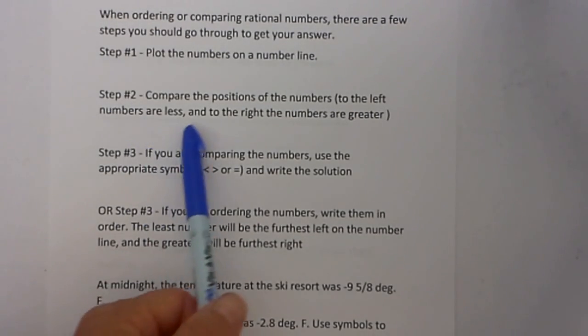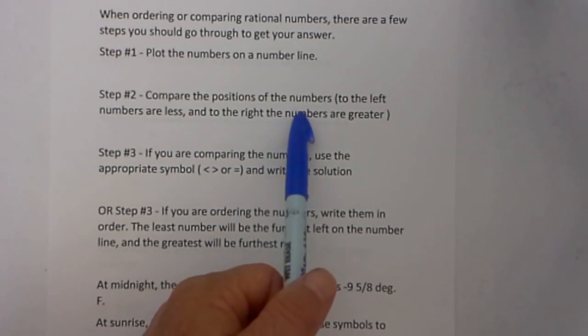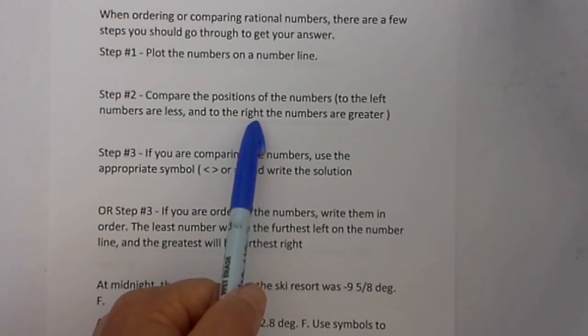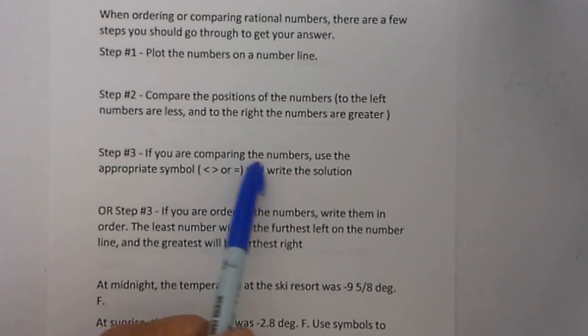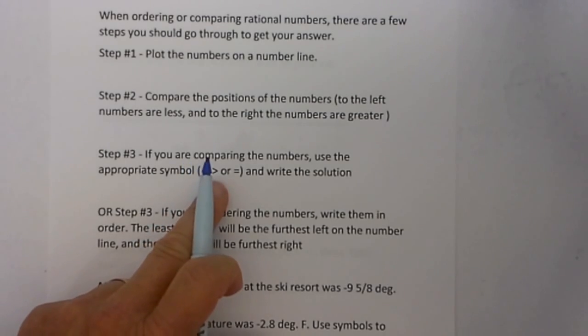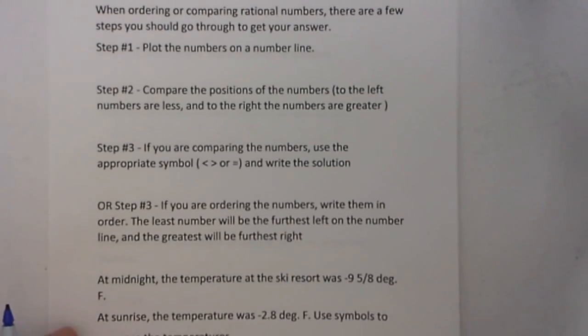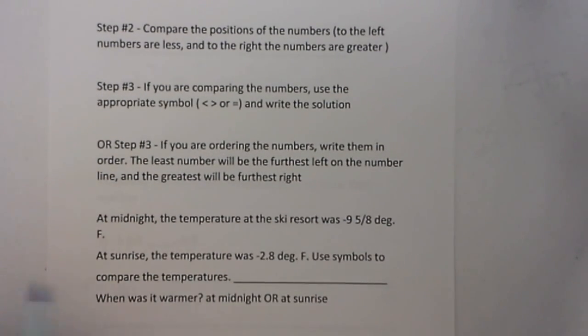Step 2: You can compare the positions of the numbers on the number line. To the left, the numbers are less, and to the right, the numbers are greater. If you are comparing the numbers, use the appropriate symbol: less than, greater than, or equal, and write the solution. Or if you are ordering the numbers, you can write them in order. The least will be the furthest to the left on the number line, and the greatest will be to the right.